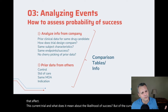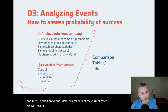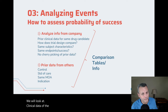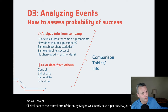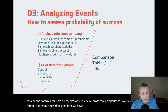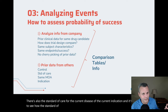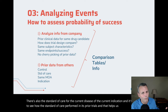In addition to prior clinical data of the current asset, we'll look at clinical data of the control arm of the study — maybe we already have peer-reviewed data on the control arm from a very similar study. Cross-trial comparisons require care, but many times that's the best we have. There's also the standard of care for the current indication, and it's great to see how the standard of care performed in its prior trials. That helps us understand what the market will see as success.